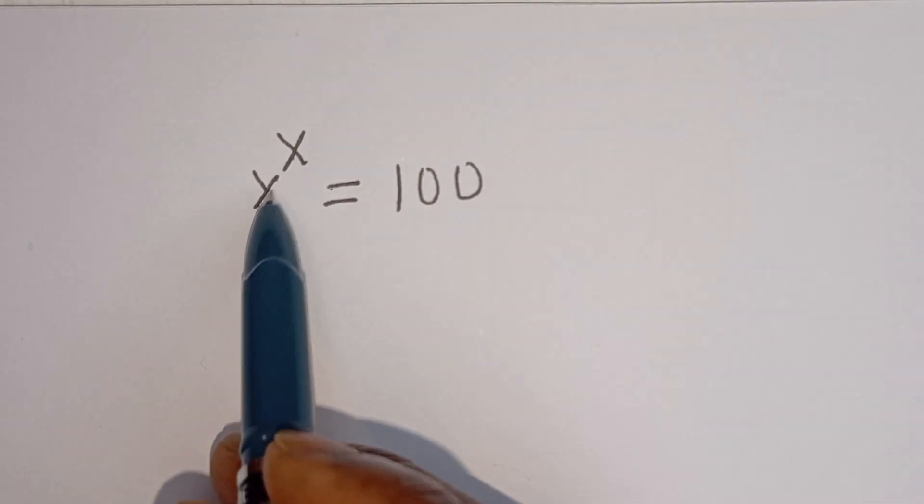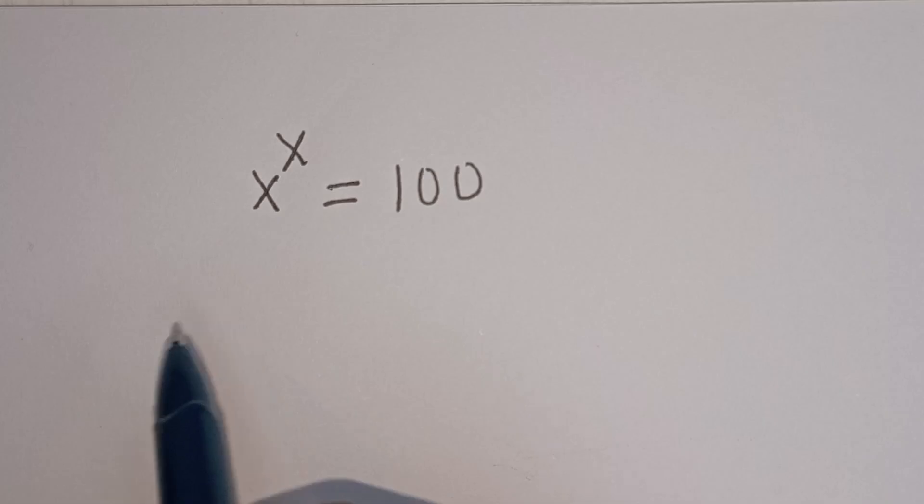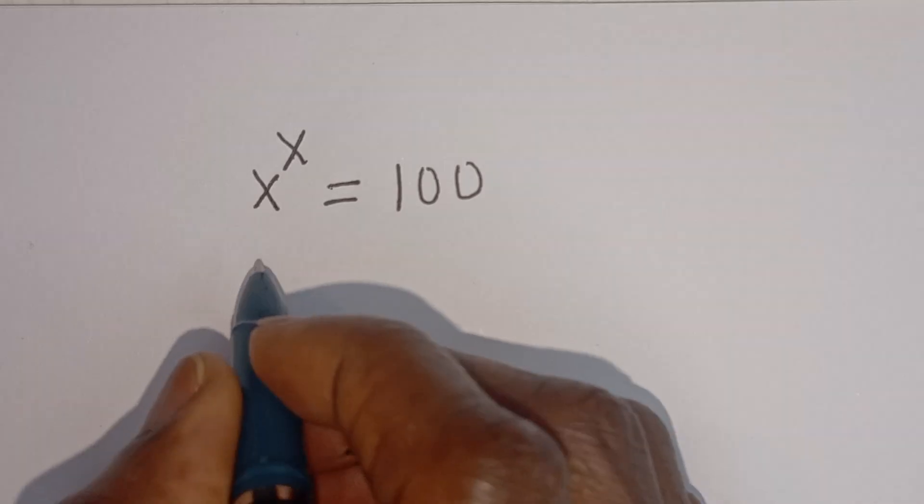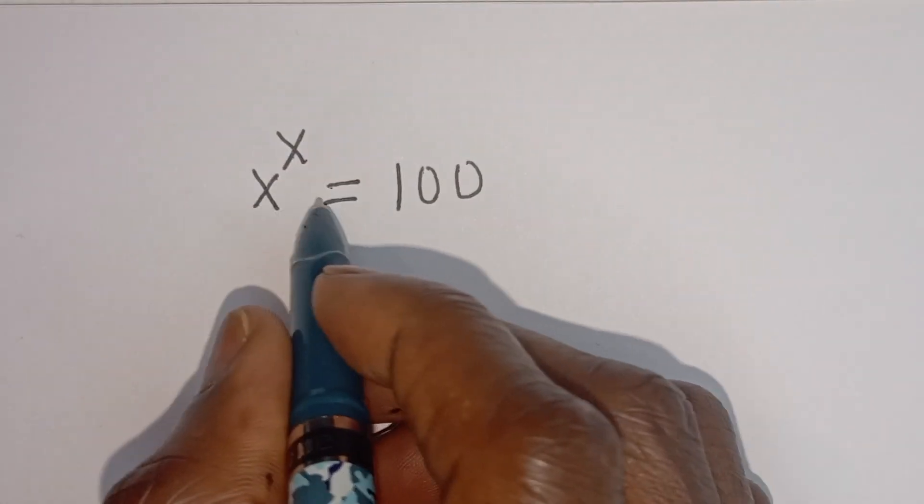Hello, how to solve for S in this equation: S to the power of S is equal to 100. Then we have, let's take the natural log of both sides.